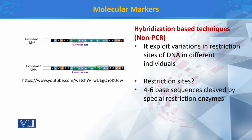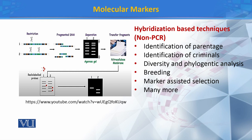Restriction sites basically DNA sequences ہوتے ہیں جن کے اندر 4 سے 6 base pairs ہو سکتے ہیں۔ ان 4 to 6 base pair restriction sites کو اگر specific enzymes سے cleave کروایا جائے تو مختلف fragments produce ہوتے ہیں۔ اس slide میں پہلے step کے اندر DNA کی restriction sites کو restriction enzymes کے ذریعے cleave کروایا گیا ہے، اور پھر ان different fragments کو agarose gel کے اوپر separate کیا گیا ہے۔